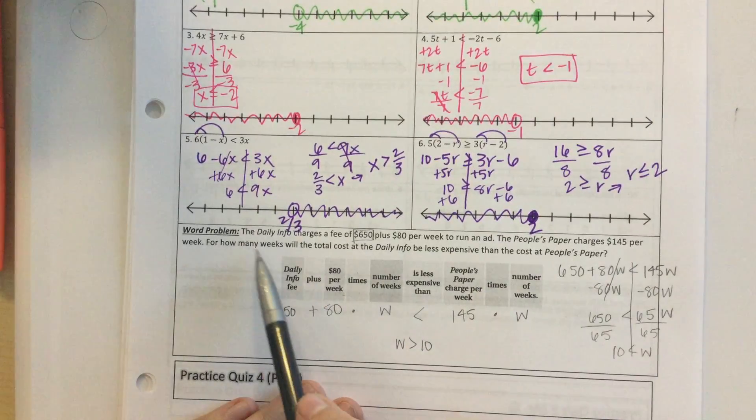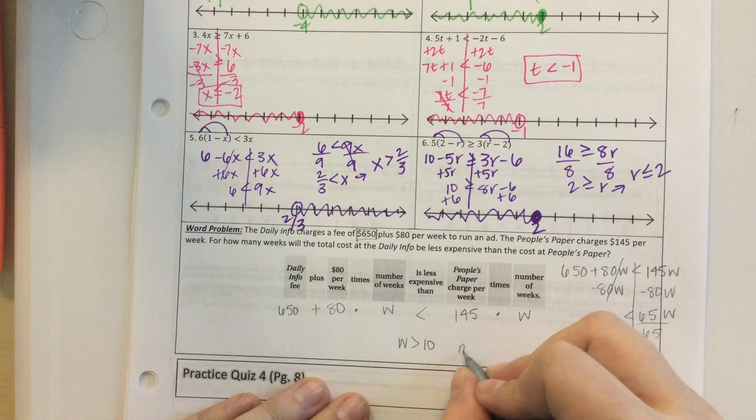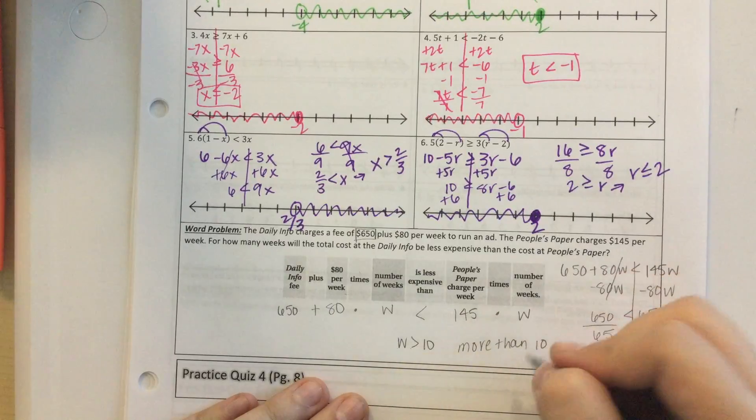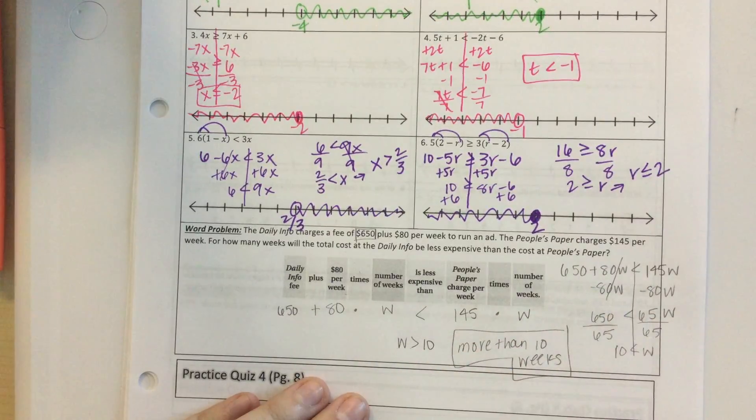So, for how many weeks will the total cost be less expensive than the cost of people's paper? More than 10 weeks. And that's it.